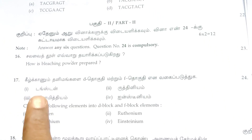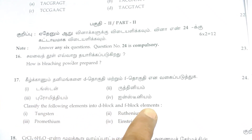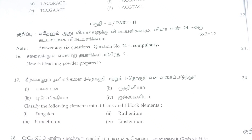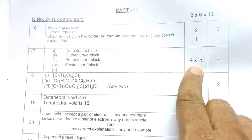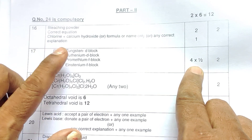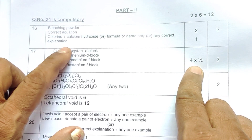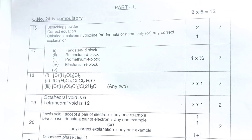Question number 17: Classify the following elements into D-block and F-block. There are four elements. You need to identify which are D-block and which are F-block — two marks each part — so four elements give four marks total, split as two marks and two marks.